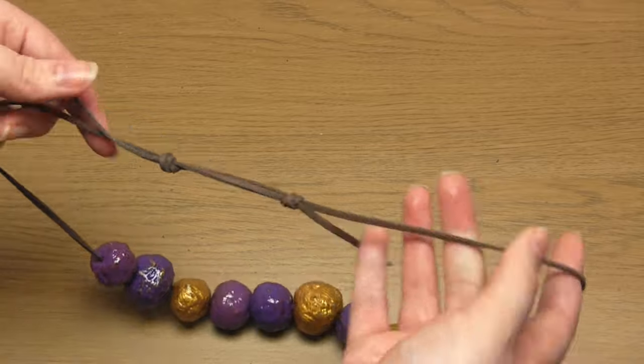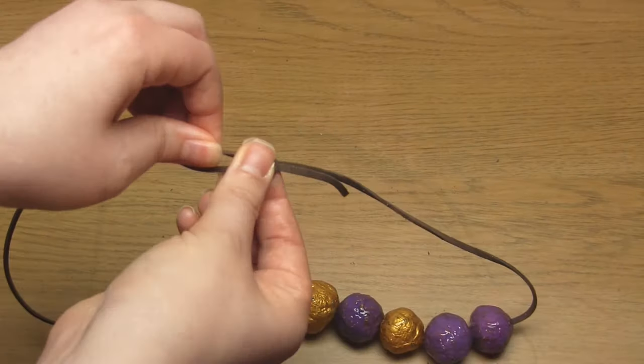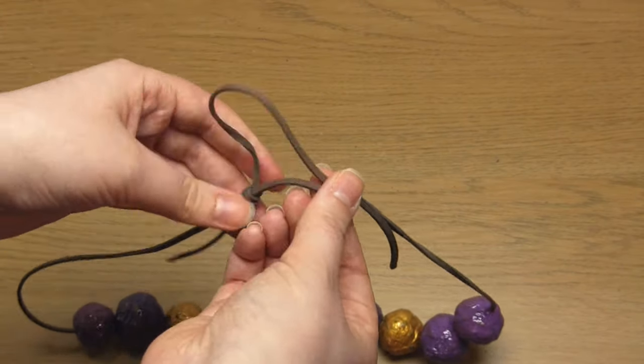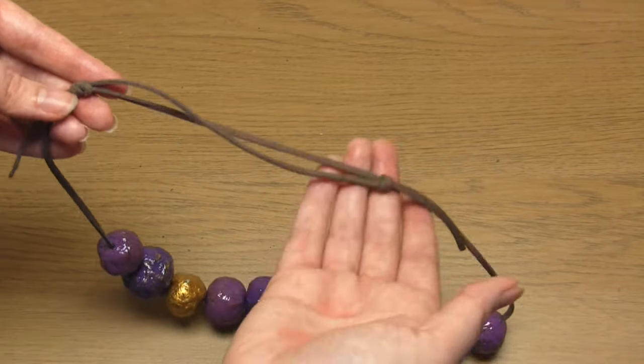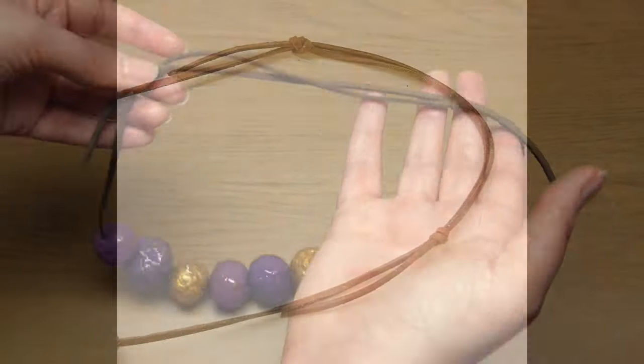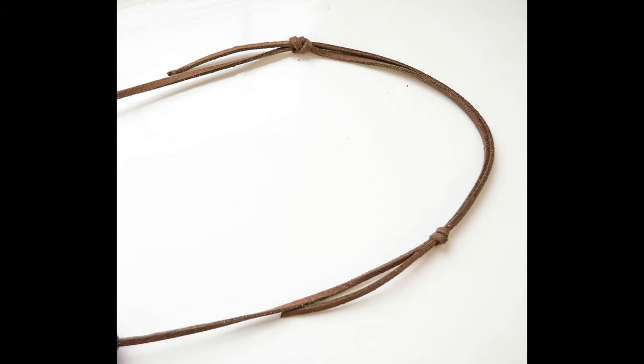And that's it. You've now completed the sliding knots and you now have an adjustable necklace. You can now just remove any excess cord at the ends, but make sure you leave enough to grab onto. And that's it. I hope this video was helpful and thank you very much for watching.